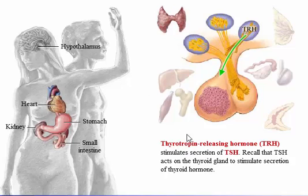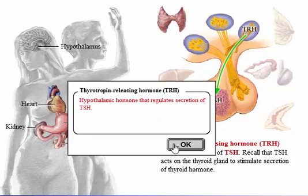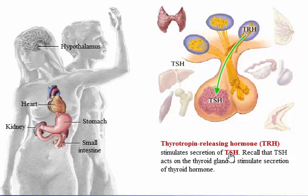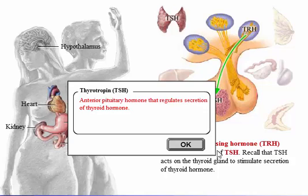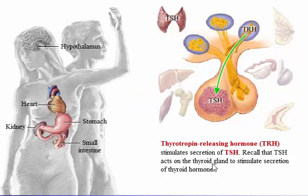Thyrotropin-releasing hormone (TRH) stimulates secretion of thyroid-stimulating hormone, or thyrotropin (TSH). Recall that TSH acts on the thyroid gland to stimulate secretion of thyroid hormone.